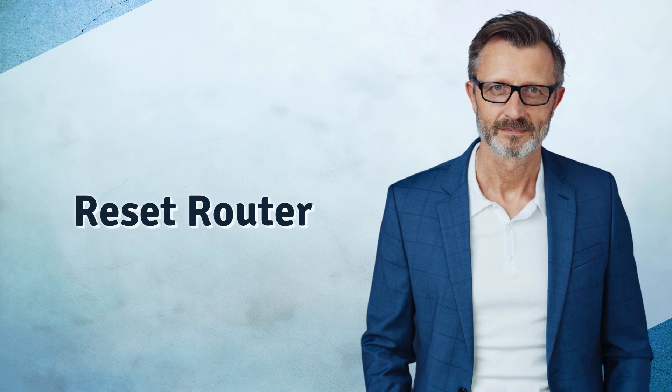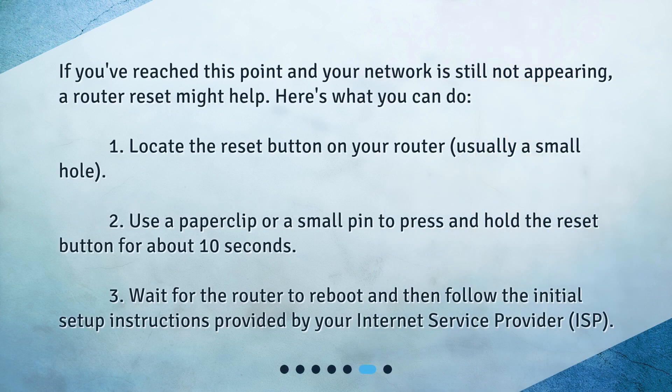Reset router. If you've reached this point and your network is still not appearing, a router reset might help. Here's what you can do: 1. Locate the reset button on your router, usually a small hole. 2. Use a paper clip or a small pin to press and hold the reset button for about 10 seconds. 3. Wait for the router to reboot and then follow the initial setup instructions provided by your internet service provider (ISP).